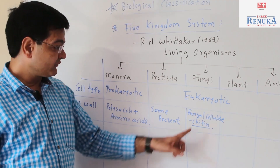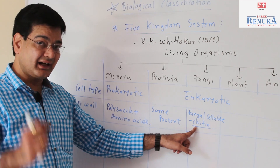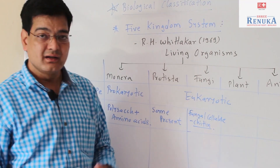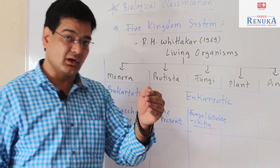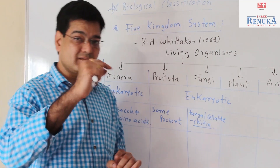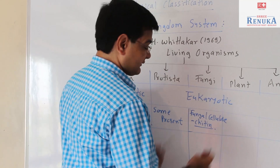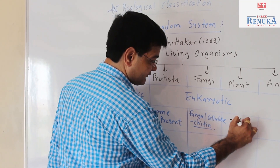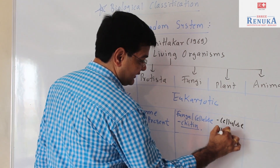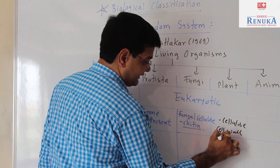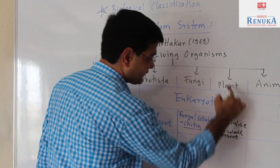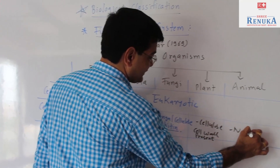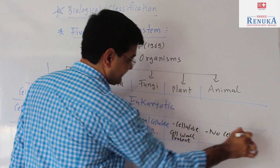Chitin is also found in some arthropod animals. The difference is that in the case of the fungal cell wall, chitin is a soft structure, but in the case of arthropod animals, the chitin contains calcium salts, so comparatively it is tough. In the case of plants, the cell wall is formed of cellulose. In the case of animals, there is no cell wall.